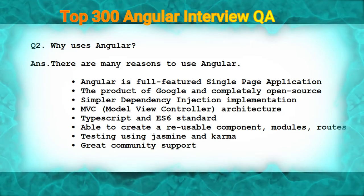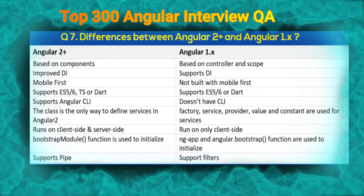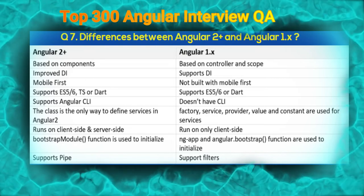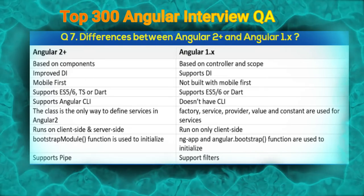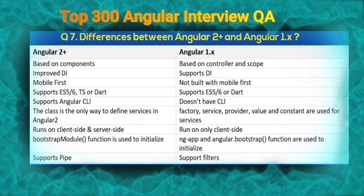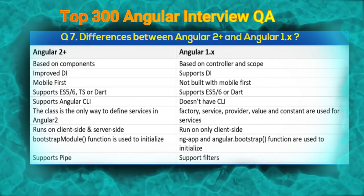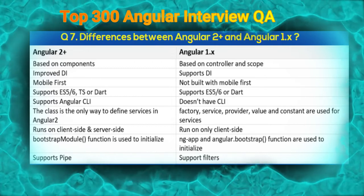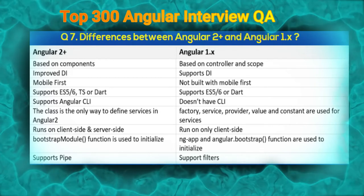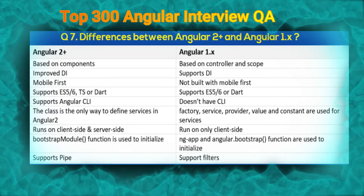The next question is: what are the differences between Angular 2+ and Angular 1.x (AngularJS)? Angular is based on components, but AngularJS is based on controllers and scope. In Angular, dependency injection is much more improved, but in AngularJS it is not as improved. In Angular, applications are made for mobile as well, but in AngularJS it is not built for mobile.